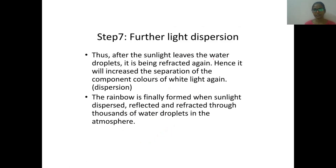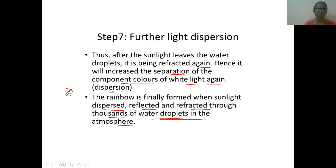After sunlight exits the water droplet, it is being refracted again — hence it even increases the separation of the component colors. The rainbow is finally formed when sunlight is dispersed, refracted, and reflected through thousands of water droplets in the atmosphere. If it happens in only one droplet, we cannot see much effect — it must happen from thousands of water droplets. Only then do we observe the rainbow.